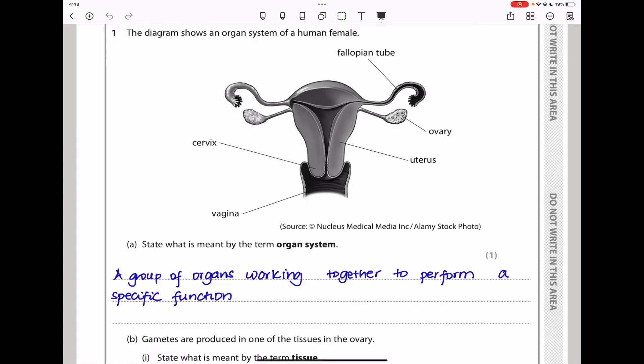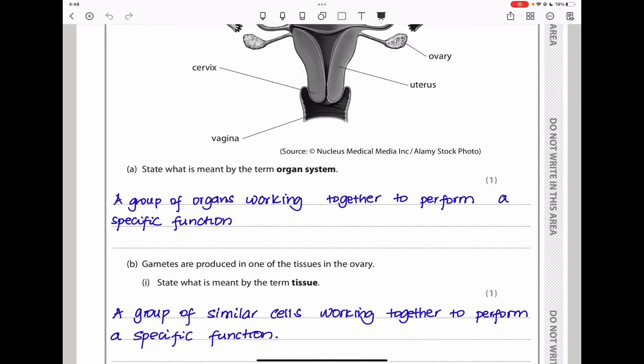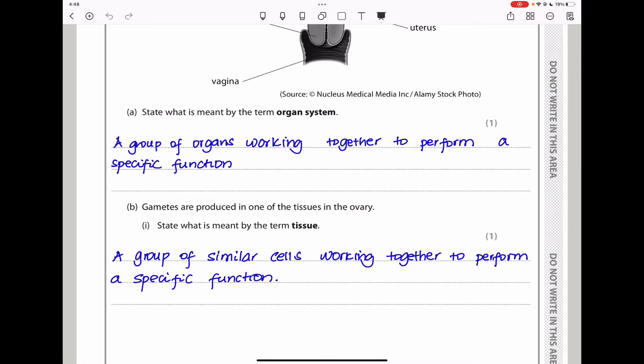An example of an organ system is the digestive system. We have organs like the pancreas, the liver, the stomach, and so on. They work together to ensure that food is broken down into smaller molecules that can be absorbed by the body.